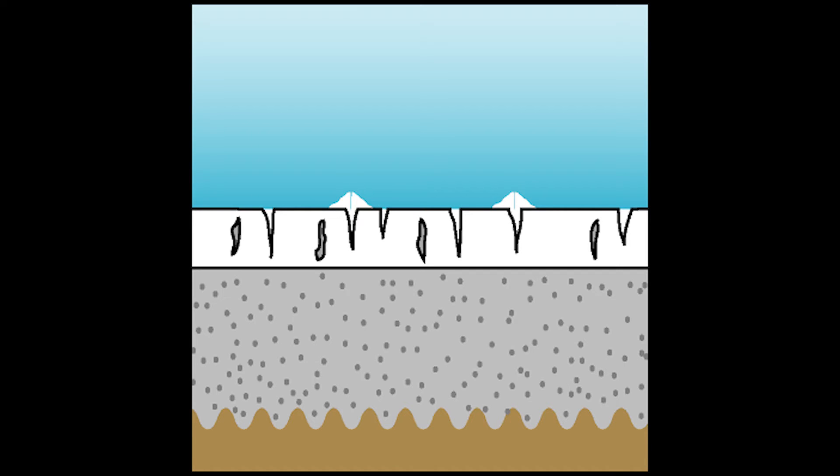Nodules on cracks tend to be much smaller than bond failure nodules, but their shape is still dictated by gravity. If they form on a horizontal surface, they're generally small round mounds. If they form on a vertical surface, they might drip down from the crazing like stalactites. Sometimes they appear simply as raised ridges outlining the craze pattern.